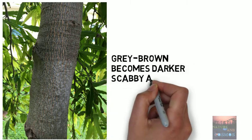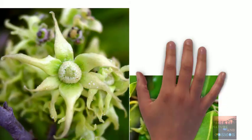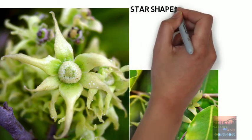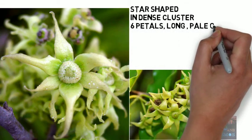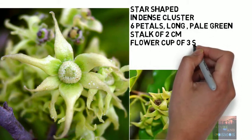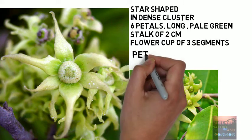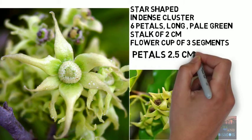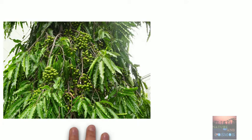The bark is gray-brown and it becomes darker, scabby, and cracked with age. The flowers are star-shaped, pale greenish-yellow in color, as seen in the photograph. They are formed in dense clusters along the branchlets. Each flower has a slender stalk of two centimeters long, a flower cup of three short triangular segments, and six narrow pointy petals up to 2.5 centimeters long. It's hard to notice this flower because it is usually well hidden within the foliage.